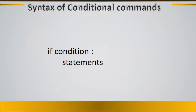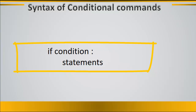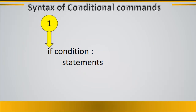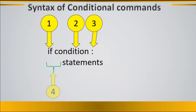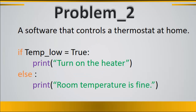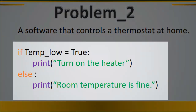The general syntax of a conditional command is as follows: you write the word 'if', followed by your condition and a colon. The next statements should be indented by four spaces. Then you write your statements. Here is an example of software that controls a home thermostat: if temperature is low, print 'turn on the heater', else print 'room temperature is fine'.